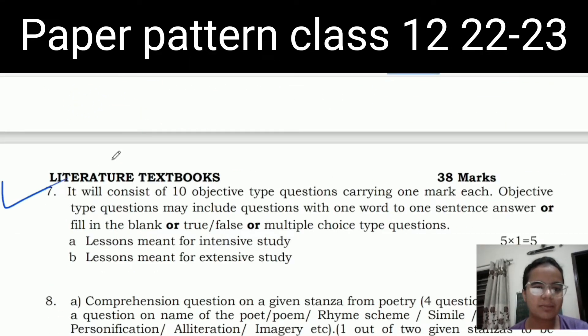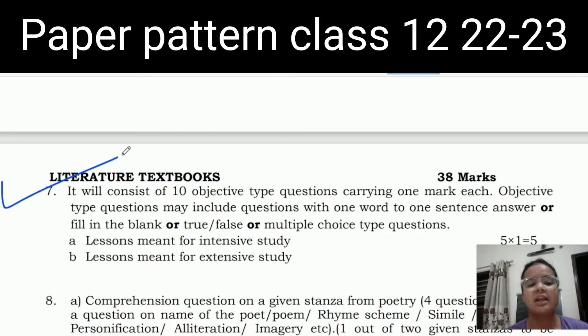In section C, you will have the literature textbook. There will be 10 objective type questions which will be one mark each. Objective type questions include questions with one word and one sentence, fill in the blank, true false, and multiple choice type questions. Then, lessons meant for intensive study and lessons meant for extensive study. These two will be 5 marks each.